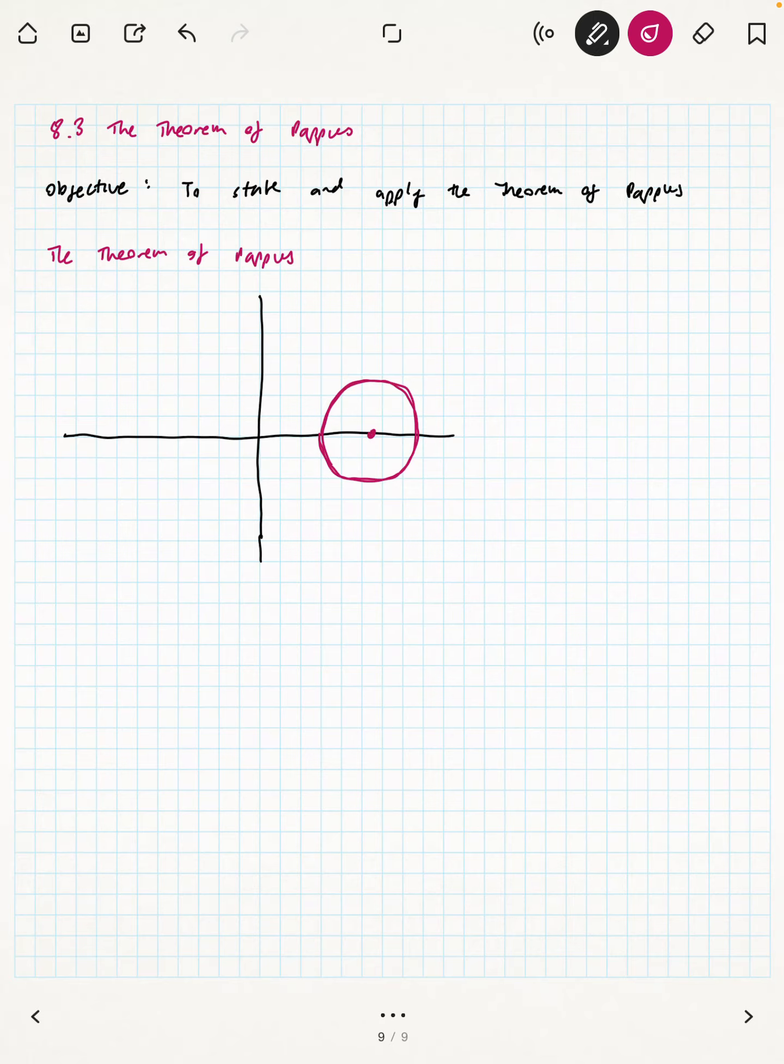This is 8.3 still. We're going to talk briefly about the theorem of Pappus. This was known in antiquity to Pappus, a Greek Ionian mathematician.